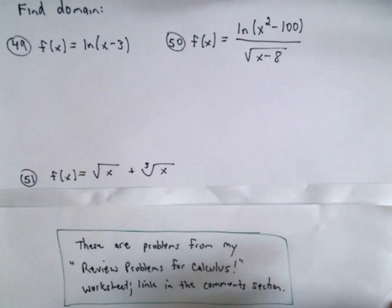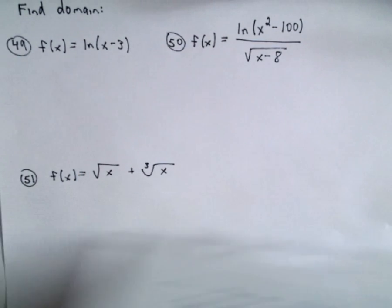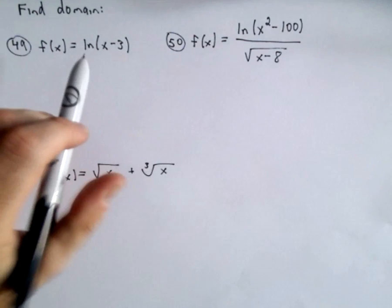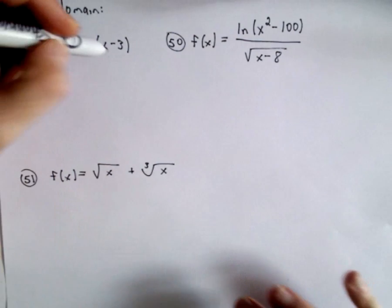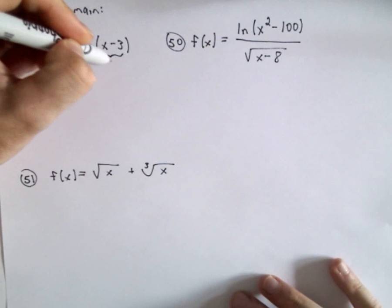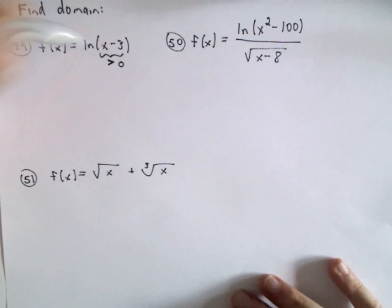Okay, so just three more questions involving finding the domain. In the previous video, we said that if you have a logarithm, the quantity inside of the logarithm has to be strictly greater than zero.